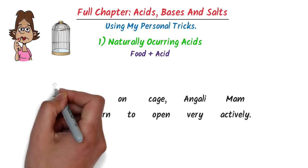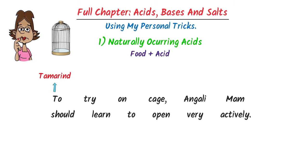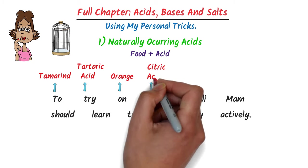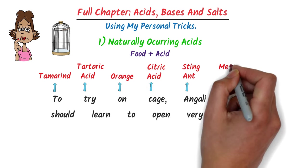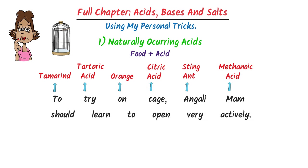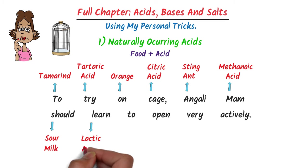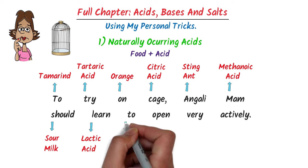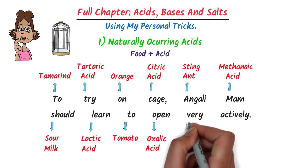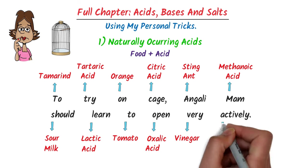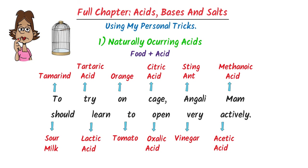Here, T stands for tamarind — this T stands for tartaric acid. O stands for orange, C stands for citric acid. A stands for ant sting, M stands for methanoic acid. S stands for sore milk, L stands for lactic acid. T stands for tomato, O stands for oxalic acid. V stands for vinegar, and A stands for acetic acid.